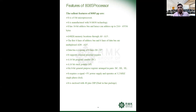It has eight general purpose register pairs like BC, DE, and HL. There are also two temporary registers, W and Z, which are not available to the user. It operates with a five-volt power supply, and the operating frequency of the 8085 processor is 3.2 MHz. It comes in a 40-pin dual inline package, or DIP package.